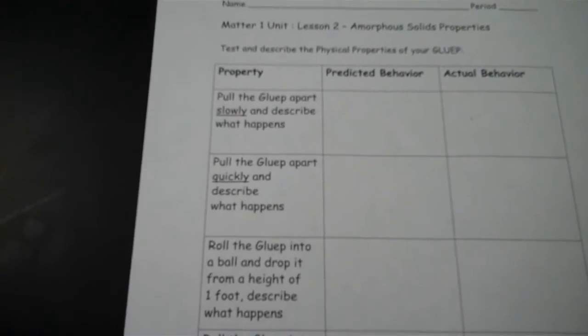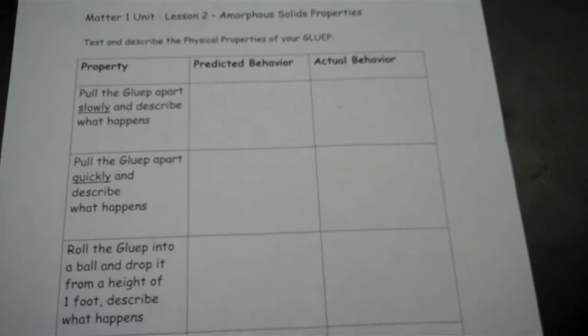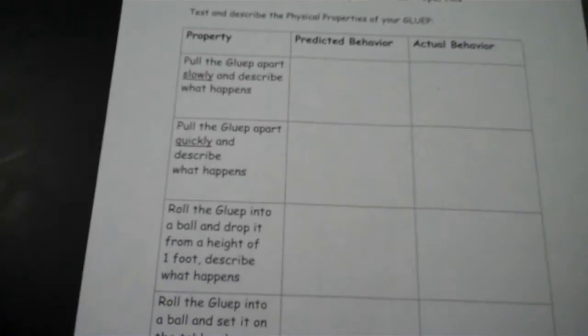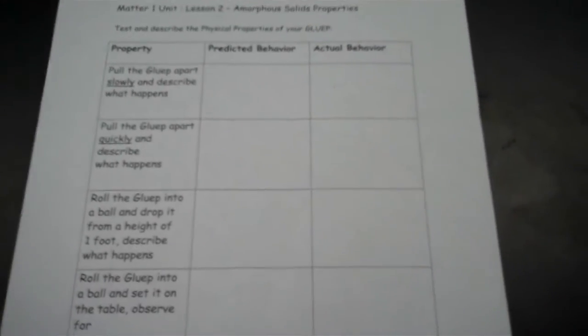In the first one it says pull the gloop apart slowly and describe what happens. Simply write a sentence describing what you think will happen, and do that for the other properties we're going to test. We'll give you a few minutes, and then when you're done, you'll go back to your lab table.